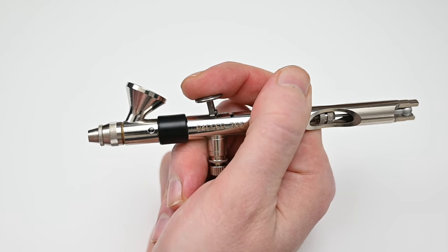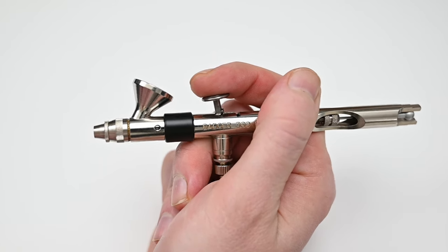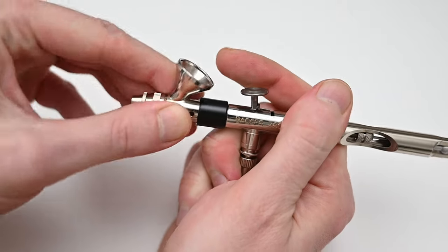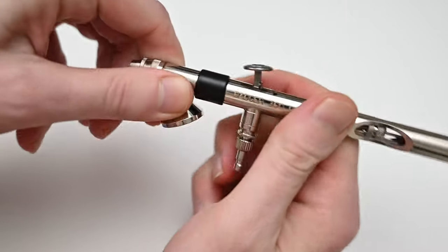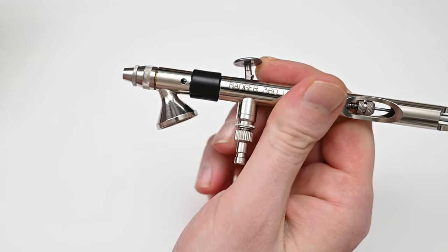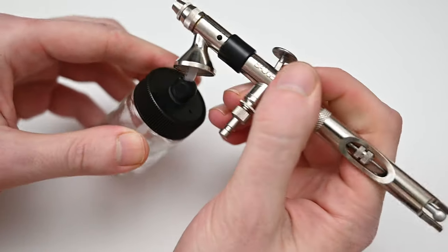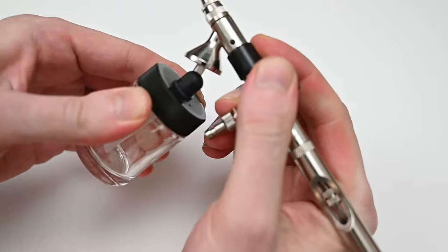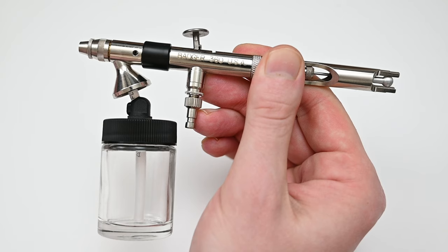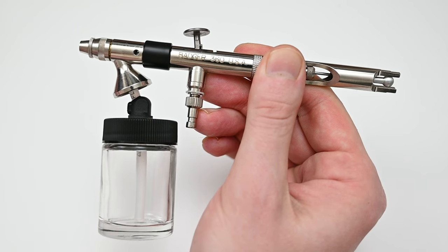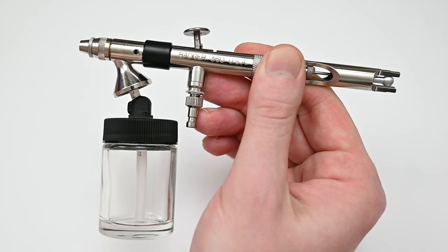But if you're going to be painting a large area or a very large surface, you could actually rotate this cup 360 degrees. If you rotate the cup halfway to the 180 degree position, this airbrush now works as a siphon-fed airbrush. And with the siphon-fed jar connected to the bottom of the airbrush, you can now hold way more paint than you can with a traditional gravity-fed cup.